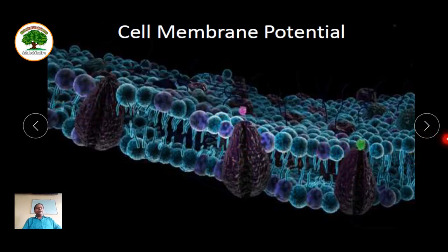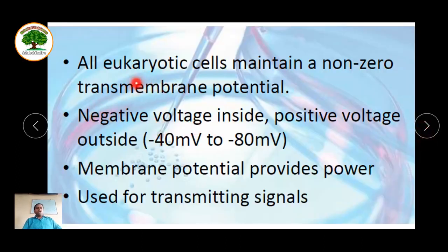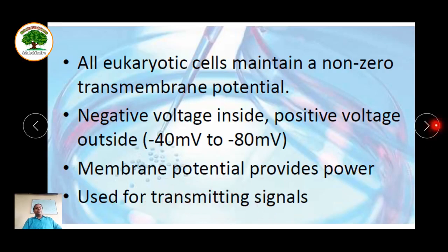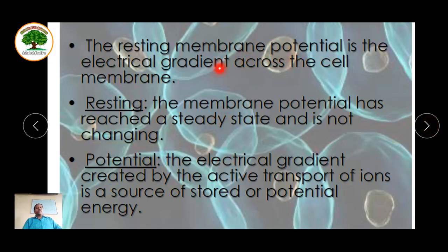These integral pumps present in the cell membrane help in generating the cell membrane potential. All eukaryotic cells maintain a non-zero transmembrane potential — at least a small current will be present. There is a negative voltage inside and positive voltage outside, of about minus 40 millivolts to minus 80 millivolts. The resting membrane potential is the electrical gradient across the cell membrane that has reached a steady state and is not changing. Action potential is the electrical gradient created by active transport of ions through the membrane, which helps in transferring impulses.